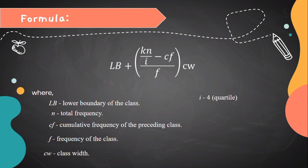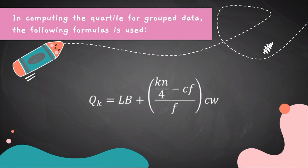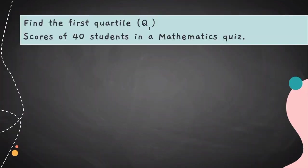I is equal to 4 when the value being sought is quartile, I is equal to 10 when the value being sought is decile, and I is equal to 100 when the value being sought is percentile. In computing the quartile for grouped data, the formula used is: Q sub k equals LB plus open parenthesis KN over 4 minus CF over F close parenthesis CW. I is 4 because we are looking for the quartile.